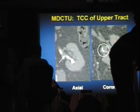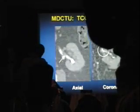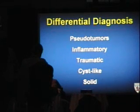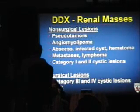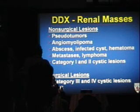CTU can also show TCC in the kidney — any urothelial thickening is TCC until proven otherwise. The differential diagnosis of renal masses can be divided into non-surgical and surgical lesions. Non-surgical lesions include pseudolesions, AMLs, inflammatory lesions, mets, lymphoma, and Bosniak 1 and 2 cysts. Surgical lesions are categories 3 and 4, and of course renal cell.